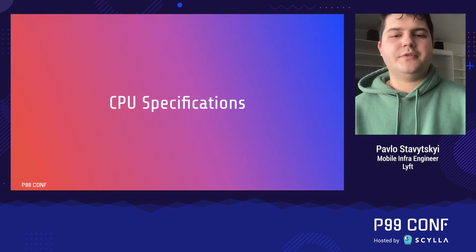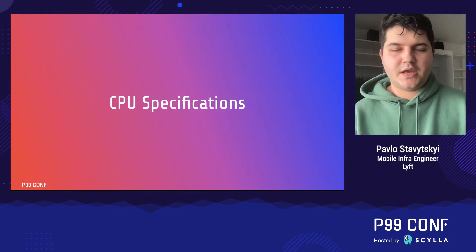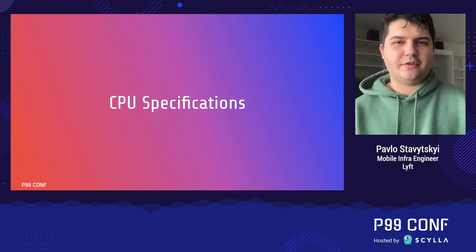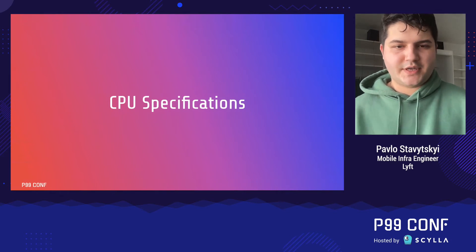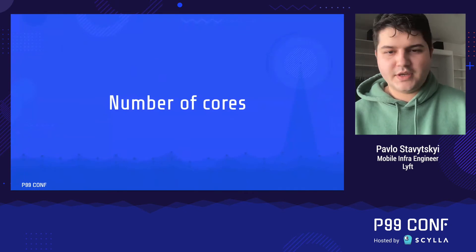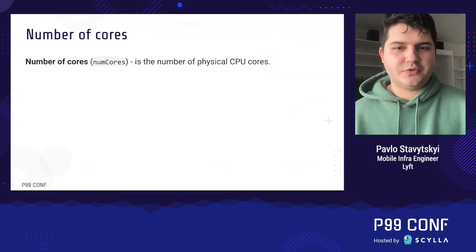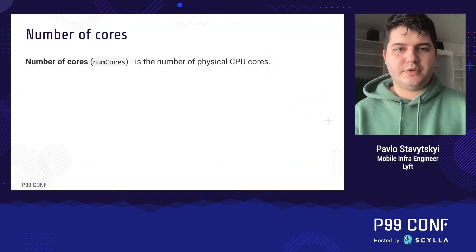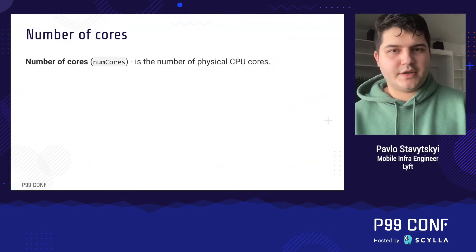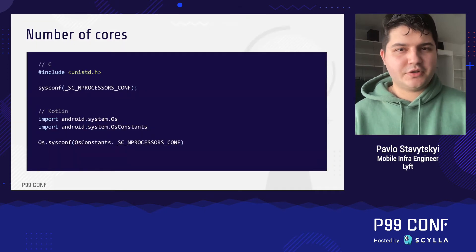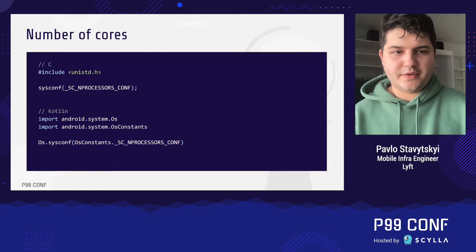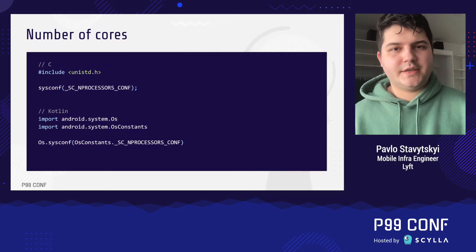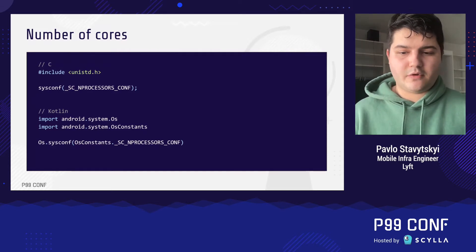The first type of data we need to collect is CPU specifications — data that doesn't change over time and is specific to the CPU the device is using. The most straightforward one is the number of cores, which shows the number of physical CPU cores on the device. As a standalone metric it's not very useful, but we'll make use of it while calculating other metrics. To get it programmatically we use the sysconf function with the correct parameter.